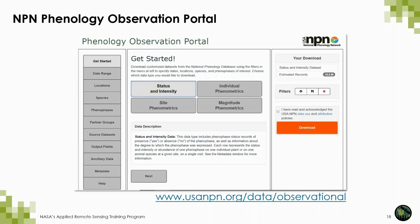Here you can filter by status and intensity — the phenophase status records of yes for presence or no for absence of the phenophase, as well as information about the degree to which the phenophase was expressed. You can also include individual phenometrics like estimates of the dates of phenophase onset and end for individual plants and animal species at a user-defined site and time period. Once you filter your search, you can download a CSV file of all the data.